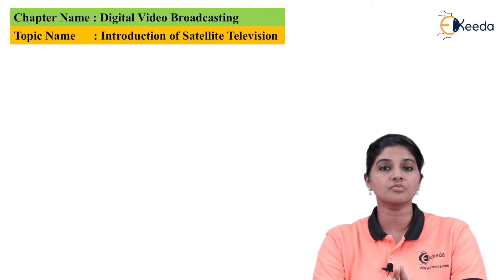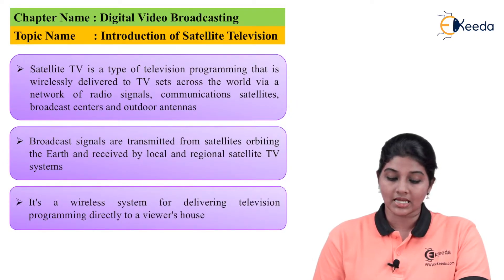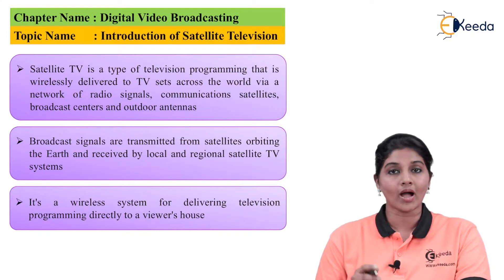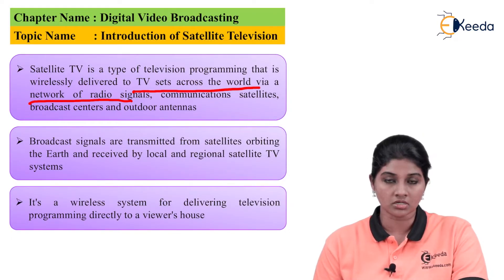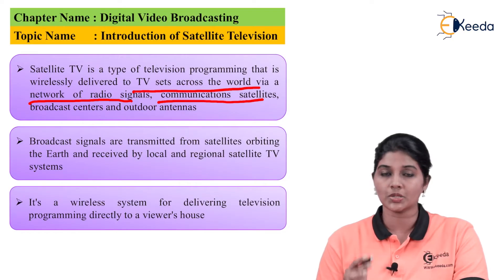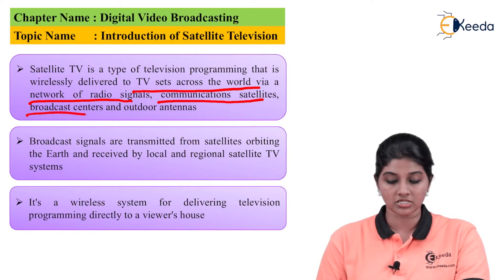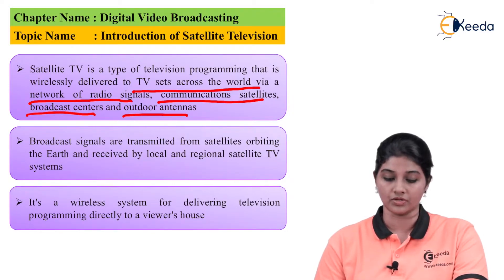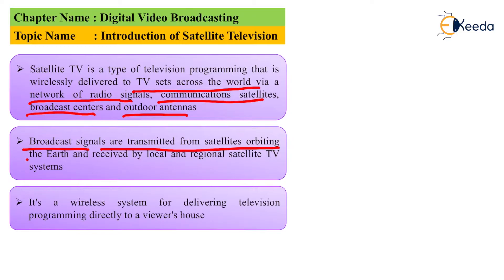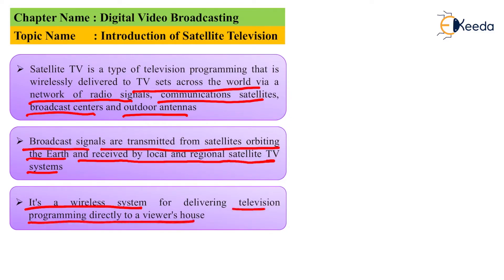Satellite TV is a type of television programming in which wireless transmission and reception takes place to a TV set across the world by using a network of radio signals, a communication satellite which plays an important role in transmission and reception, broadcast centers, and outdoor antennas. The broadcast signals are transmitted from a satellite orbiting the earth and received by a local or regional satellite TV system. It is a wireless system used for delivering television programming directly to the user's house.